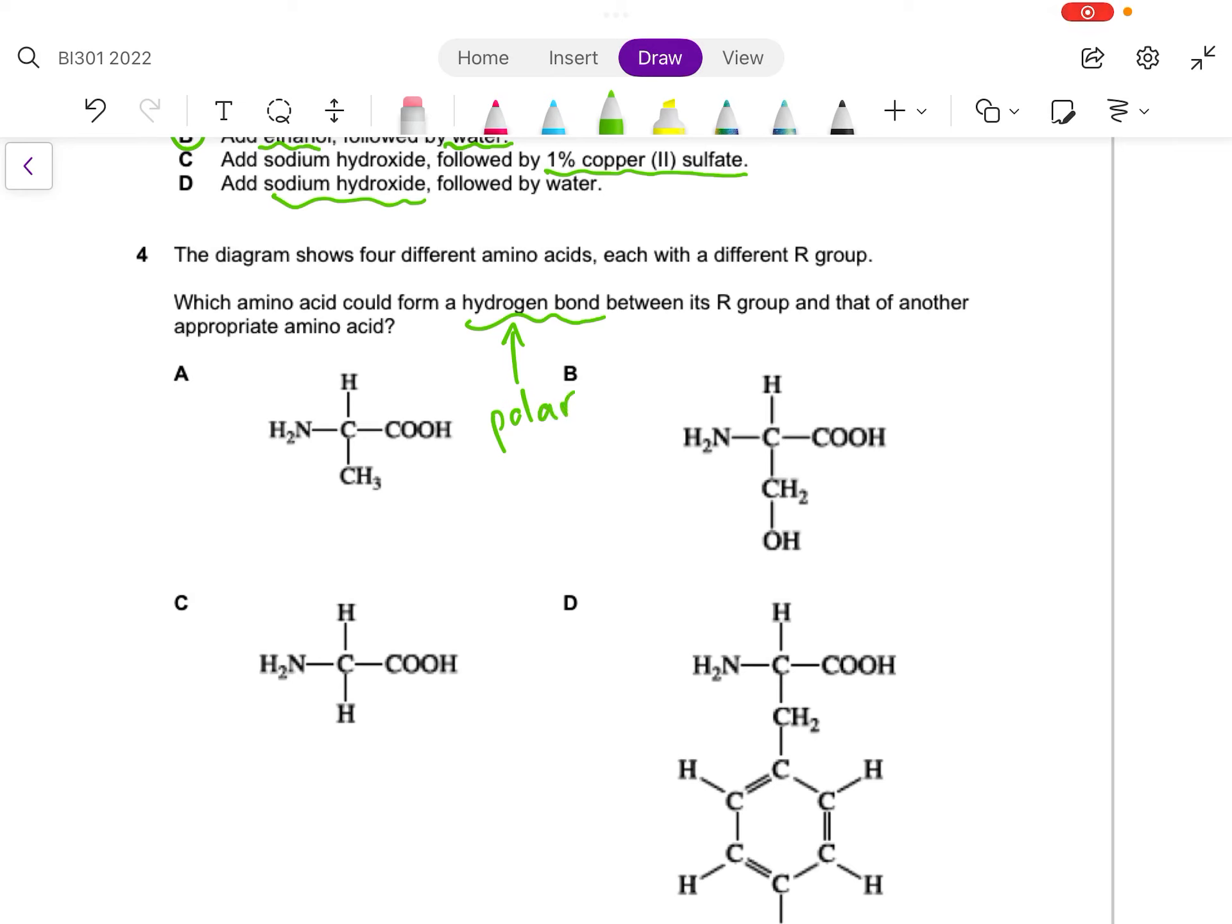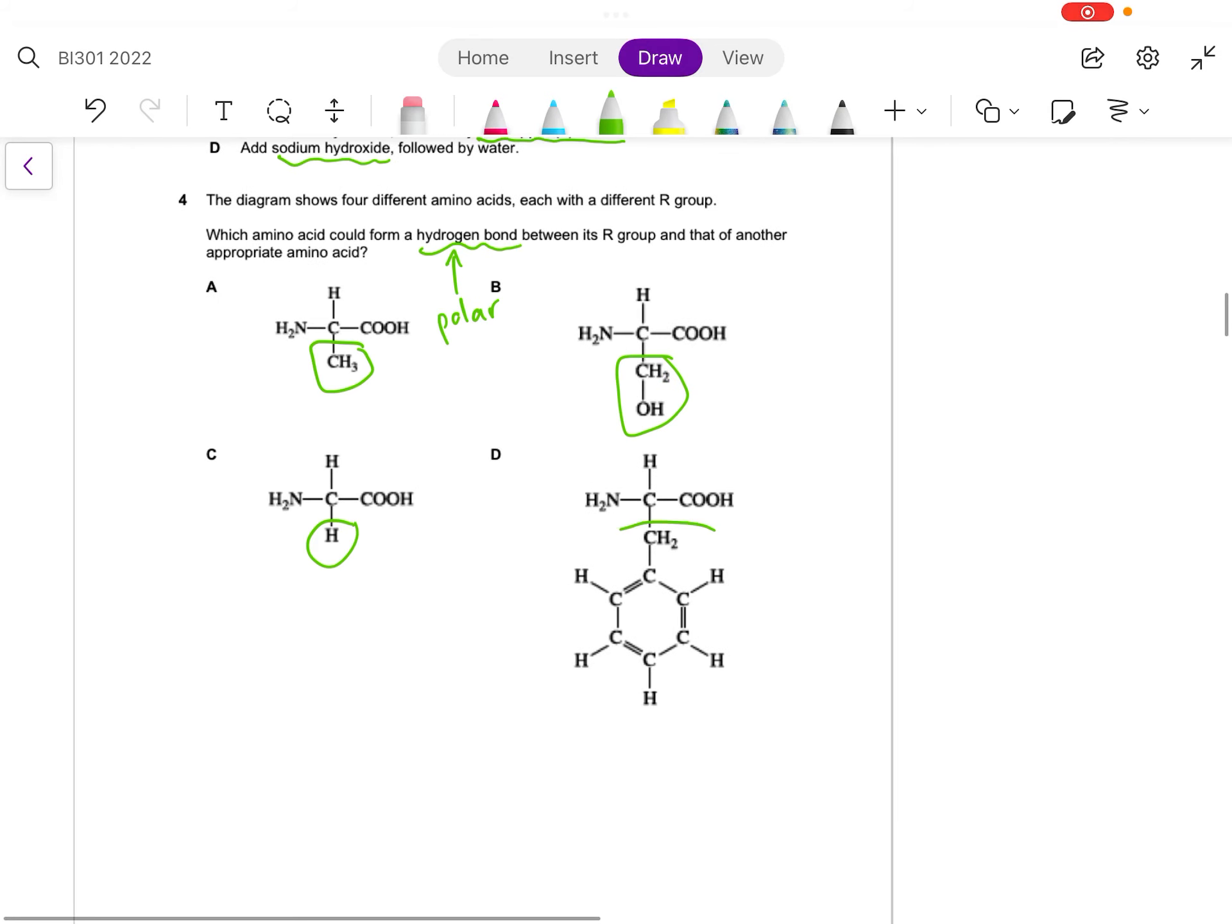So let's look for polar R groups. First and foremost, you need to know which are the R groups. This is an R group, this is also an R group, this is another R group, and this is another R group.